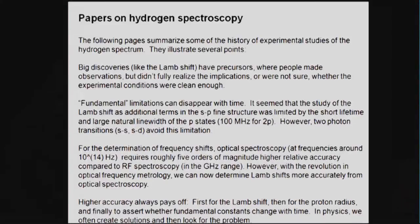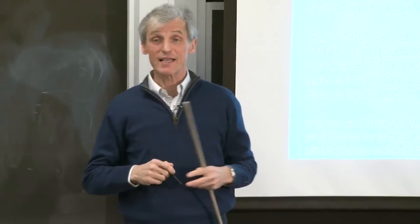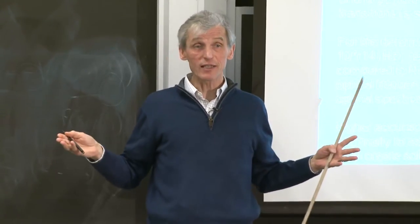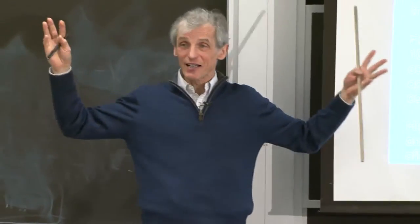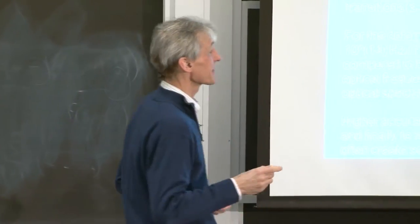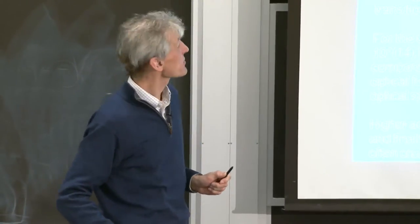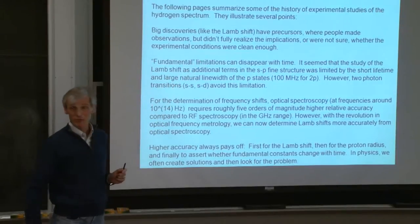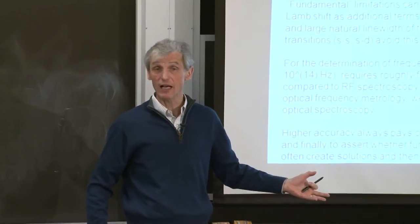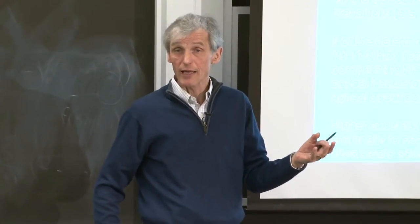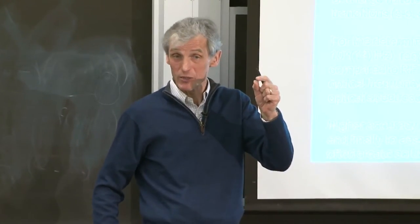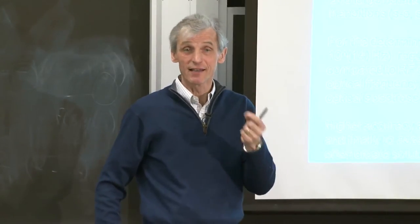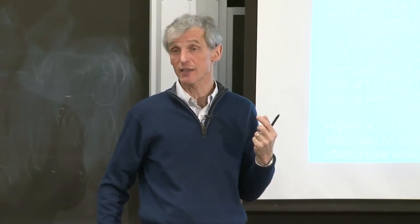What I want to discuss next is a brief historic summary of how spectroscopy of hydrogen has developed, particularly focusing on the discovery of QED through the Lamb shift. I've summarized some papers on hydrogen to illustrate several points. The discovery of the Lamb shift had precursors — 10 years before it was discovered, people already had some idea that something may be wrong with the understanding of hydrogen's structure. There were people who perhaps missed the Nobel Prize by just a little bit — they had all the insight that there may be QED corrections in hydrogen, they just didn't have the technology to measure it accurately enough.